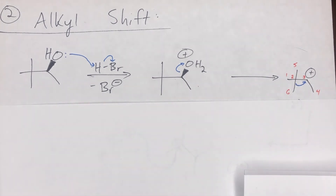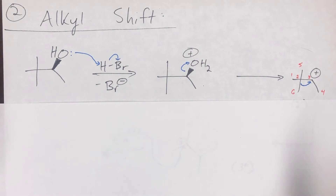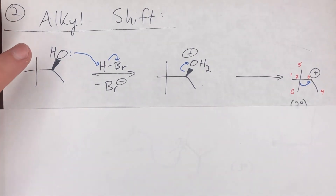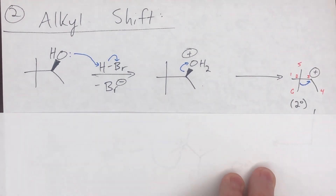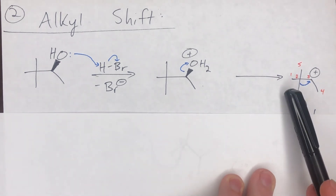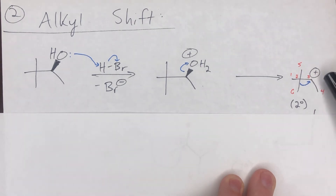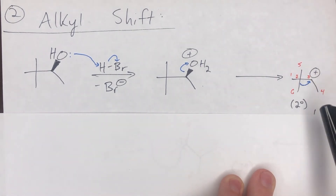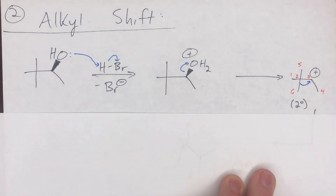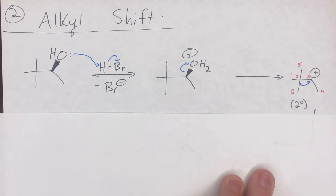When the protonated water leaves, you get a carbocation at that position — a secondary carbocation. Alkyl shifts can be very confusing for students, so I've labeled all the carbons to follow where each one goes throughout the rearrangement. Labeling left to right: carbons one through six. Carbon three is the carbocation; it's secondary because it's bound to carbon two and carbon four.